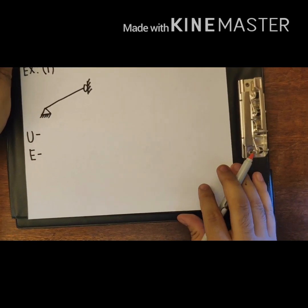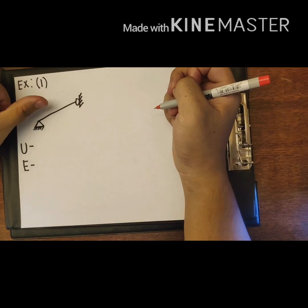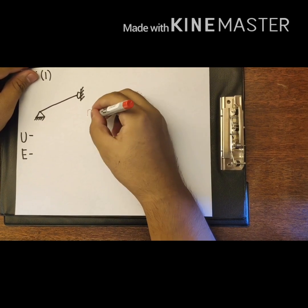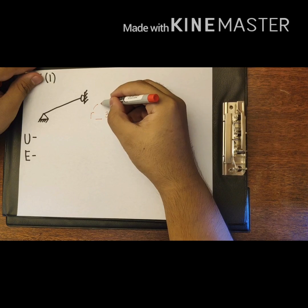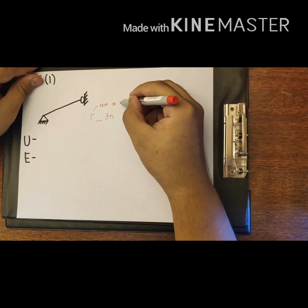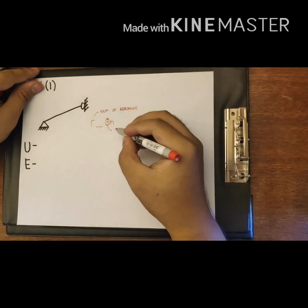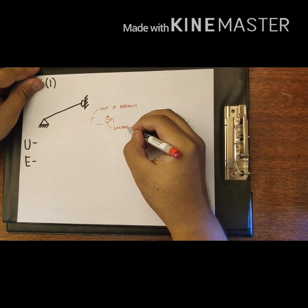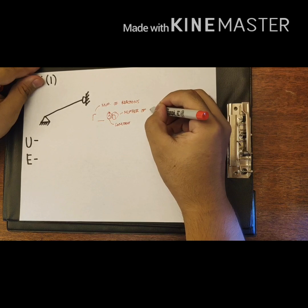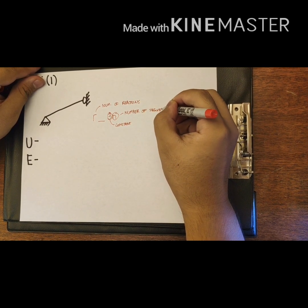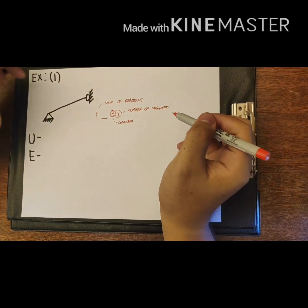For Example 1, we have a simply supported beam. To classify if it is determinate, indeterminate, or unstable, we use the formula R blank 3N. R is the number of reactions, 3 is a constant, and N is the number of segments of the beam. This formula is applicable when classifying the beam as determinate, indeterminate, or unstable.